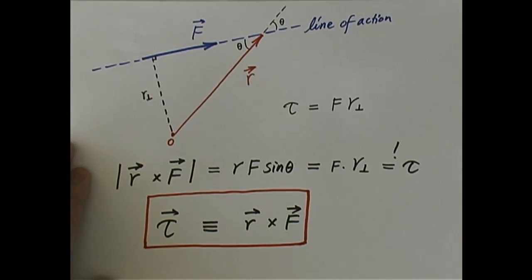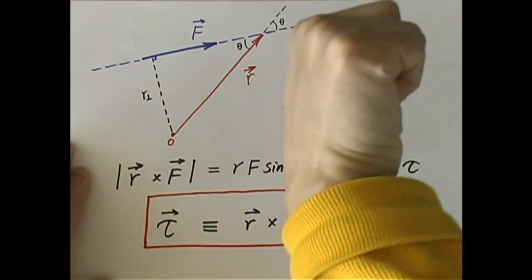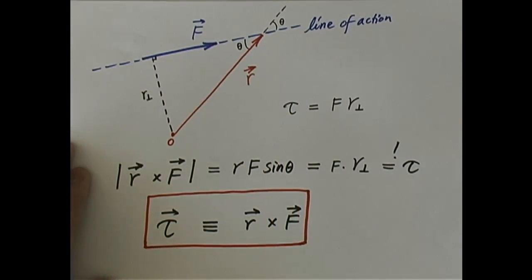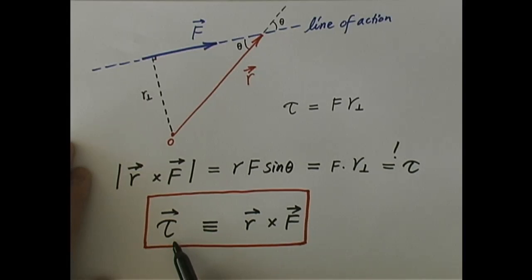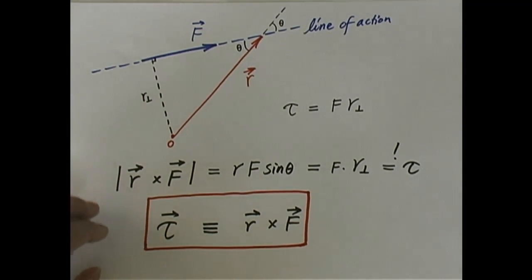That is the vector torque. What about its direction? With R cross F as I draw it, you get a vector sticking into the paper. If you reverse F or reverse R, you get a torque in the opposite direction. That is how we define vector torque. Given this definition, what I want to do now is figure out what this torque is capable of doing. From our analogy, just as external force causes the rate of change of linear momentum, I expect this torque to produce the rate of change of something called angular momentum.